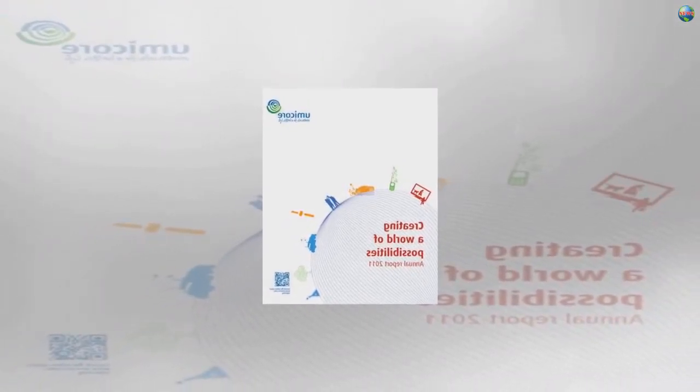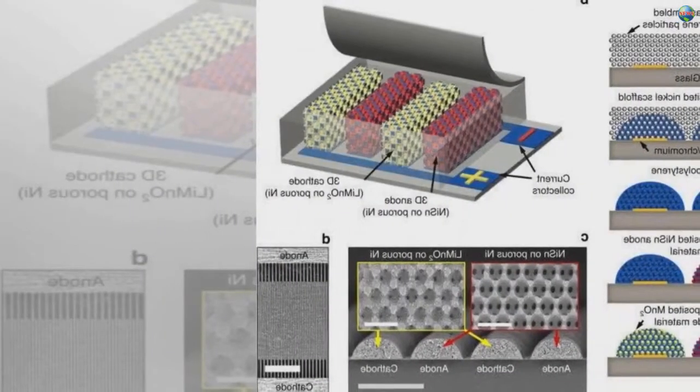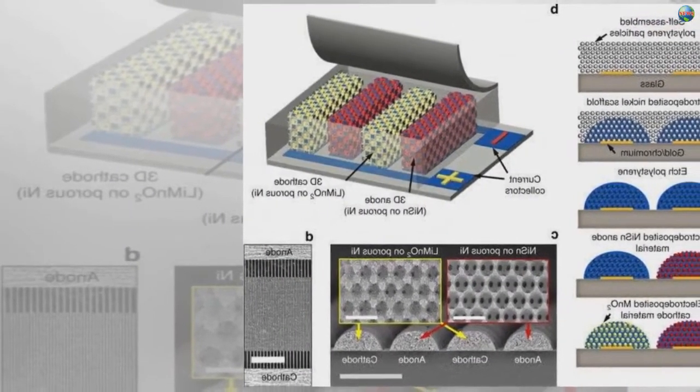Umicore's factory will be based in Nysa in southern Poland and is due to start deliveries in late 2020. Umicore's choice of Poland follows that of South Korea's LG Chem.